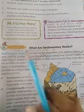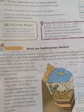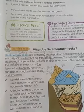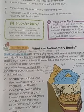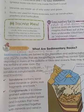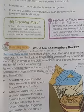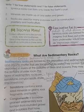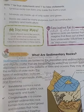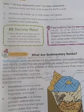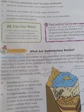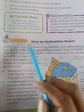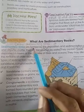Next topic is: what are sedimentary rocks? We have read the three types and three categories of rocks: igneous rocks, sedimentary rocks, and metamorphic rocks. We have already read igneous rocks, and today we will read about sedimentary rocks.